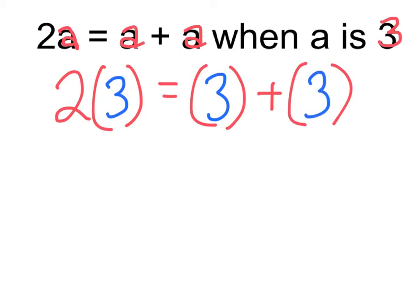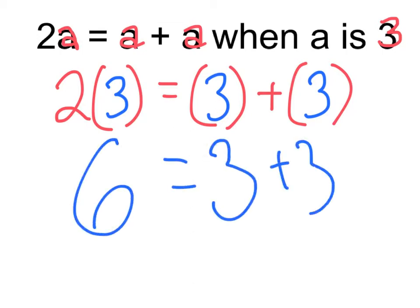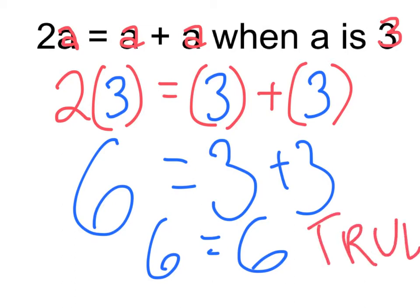Nice. And I can see that because these two numbers are separated by parenthesis, it's multiplication. 2 times 3 is 6 equals 3 plus 3, and 3 plus 3 is also 6. So 6 equals 6. This is true. Nice. Easy.